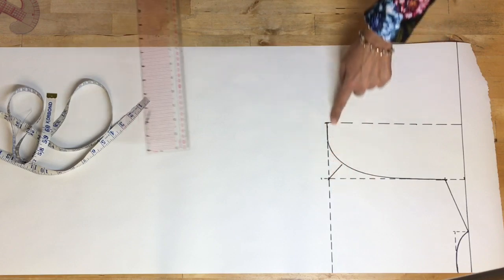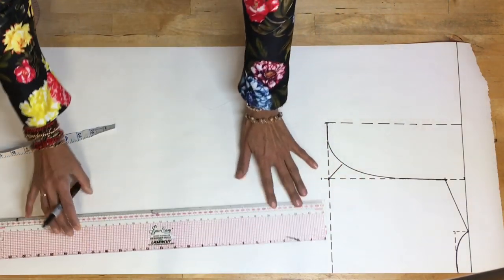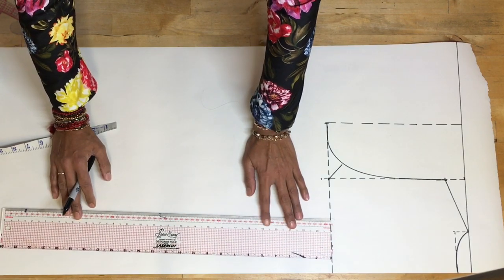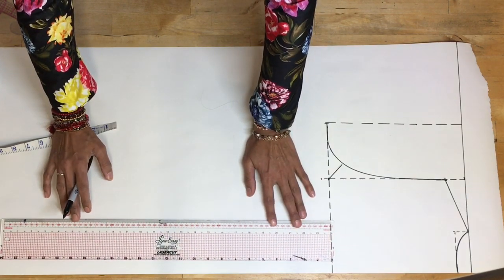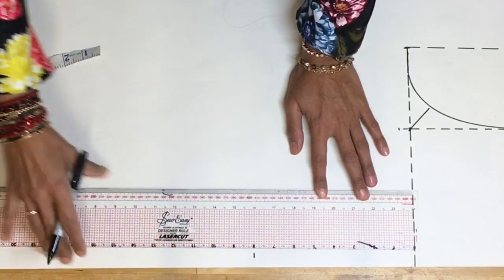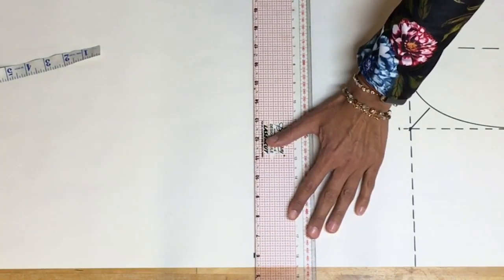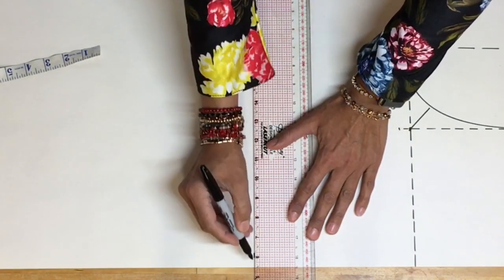So there's my bust line. Now I need to drop down to my waistline. Again, it's an average. I'm taking this, I'm an average size of 14. So I'm bringing it down eight inches to there. If I use my ruler to give me a nice straight line there, I can bring this out.